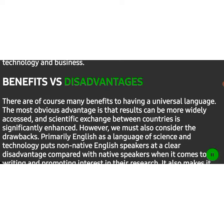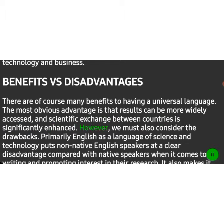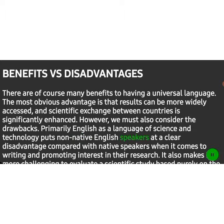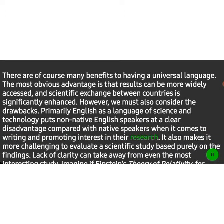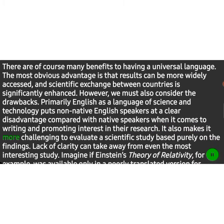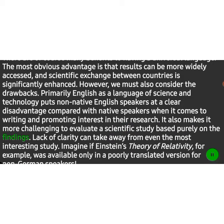Benefits vs. Disadvantages. There are of course many benefits to having a universal language. The most obvious advantage is that results can be more widely accessed, and scientific exchange between countries is significantly enhanced. However, we must also consider the drawbacks. Primarily, English as a language of science and technology puts non-native English speakers at a clear disadvantage compared with native speakers when it comes to writing and promoting interest in their research. It also makes it more challenging to evaluate a scientific study based purely on the findings. Lack of clarity can take away from even the most interesting study.